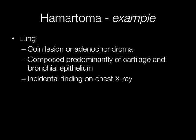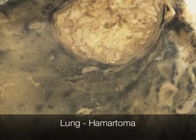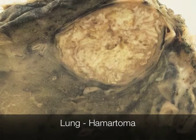Another common example of a hamartoma is the coin lesion found in the lung, otherwise known as an adenochondroma, because it is composed predominantly of cartilage and bronchial epithelium. These are often an incidental finding on chest x-rays, and here we can see the gross appearance of an adenochondroma or hamartoma.